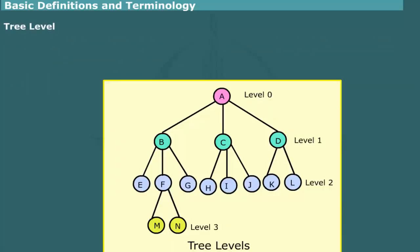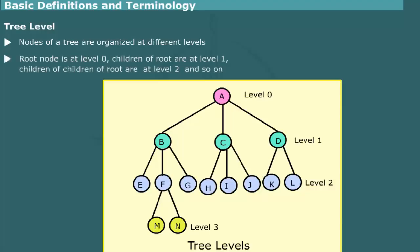Level of tree. Obviously, the nodes of a tree are organized at different levels. By convention, the root node is at level 0. The children of root are at level 1. The children of children of root are at level 2, and so on. Notice that in figure, the nodes B, C, and D are at level 1, and nodes E, F, G, H, I, J, K, and L are at level 2. The leaves M, N are at level 3.